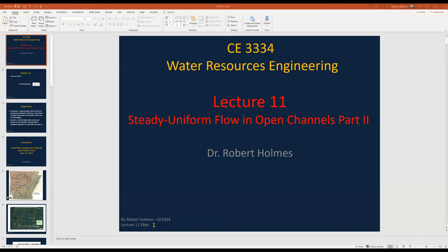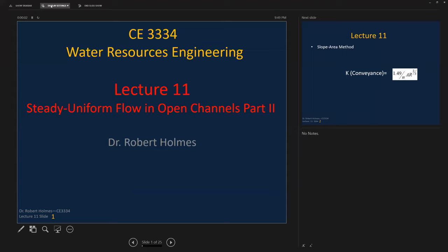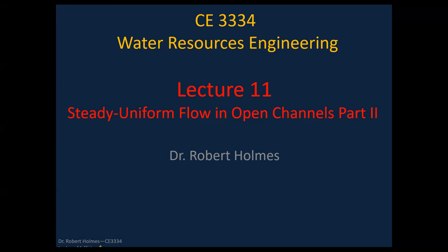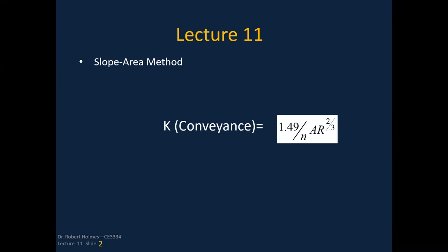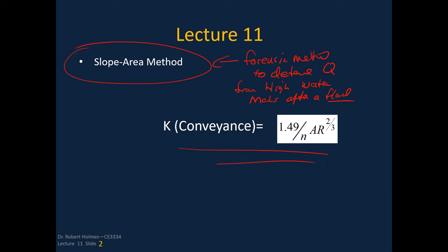Good day. We're going to do Lecture 11 and talk about open channel hydraulics. This lecture is a little simpler — there's not a lot of difficult material here. I'm going to introduce the slope area method, which is a forensic method to determine Q from high watermarks after a flood. We're also going to introduce a term called conveyance, which comes from the Manning equation.